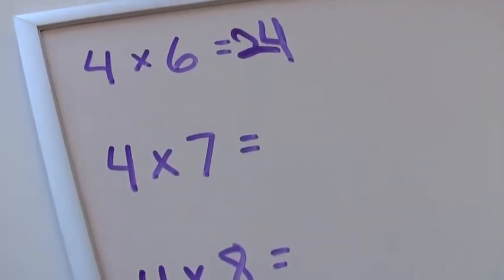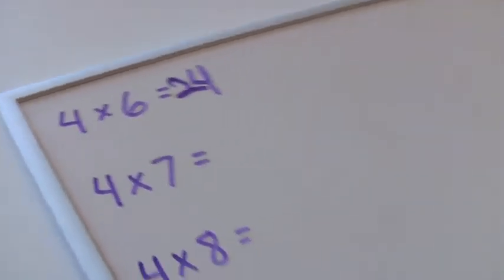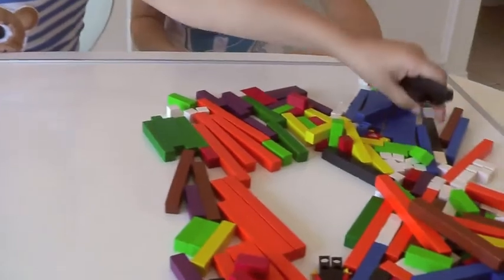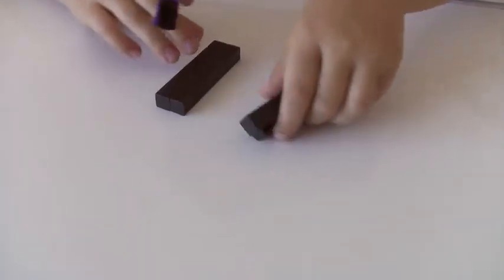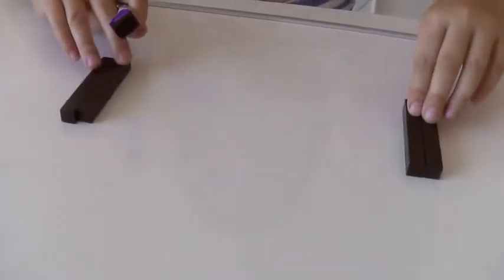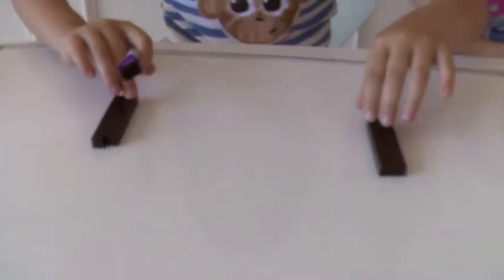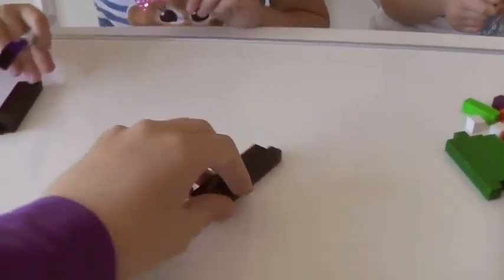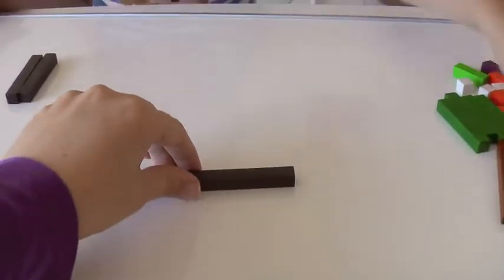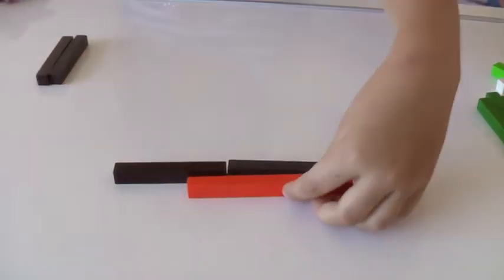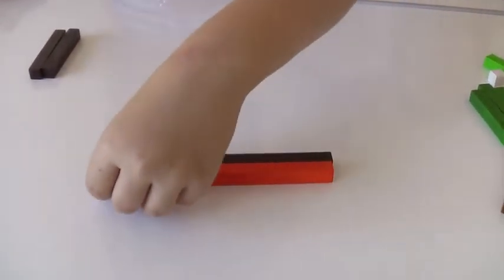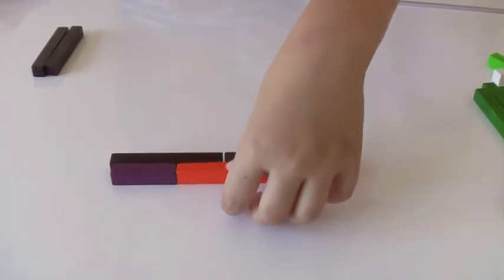She figured out the Distributive Property all on her own. I didn't have to tell her. Okay. How about four times seven? So we have four of the seven rods. All right. So seven plus seven is... Fifteen? Well, how about if we line it up, since you're not quite sure.